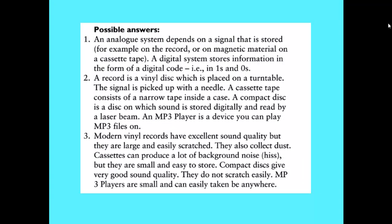Here we can see the answers. First: what are analog and digital systems? An analog system depends on a signal that's stored, for example, on the record or on magnetic material on a cassette tape. A digital system stores information in the form of digital code, i.e., in 1s and 0s.